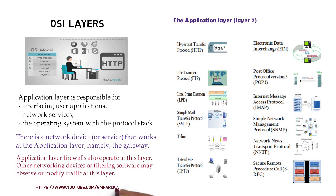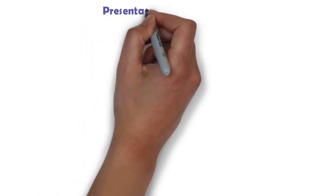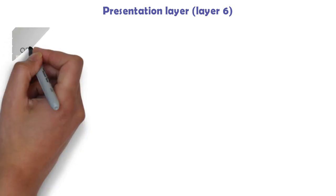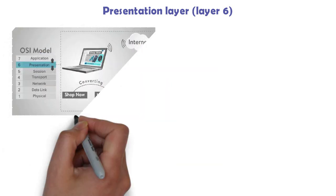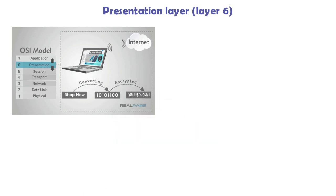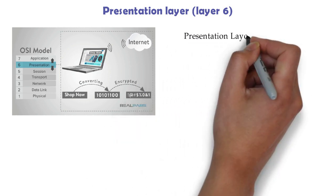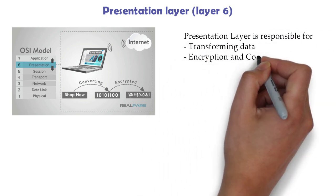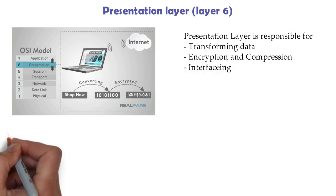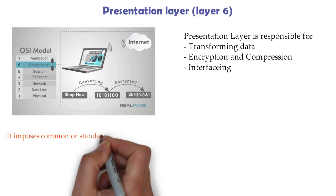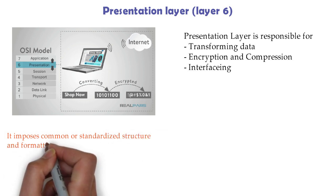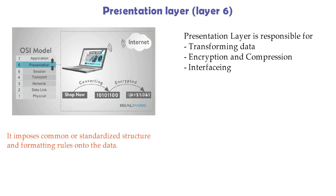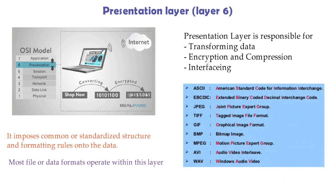Now layer 6, the presentation layer. The presentation layer is responsible for data transformation, encryption, and compression. It composes common or standard structure and formatting rules onto the data, and most file or data formats operate within this layer. Examples include ASCII, JPEG, BMP, AVI, and WAV. Now, the session layer.